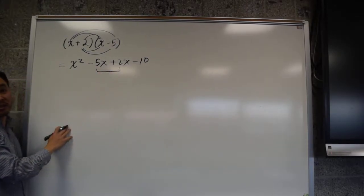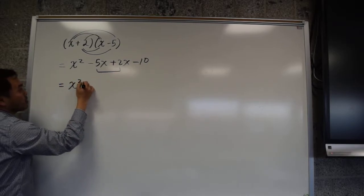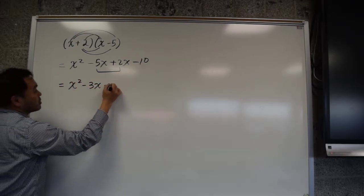Combine these two because these are like terms. These are not like terms, so you can't combine. So you get x² - 3x - 10.